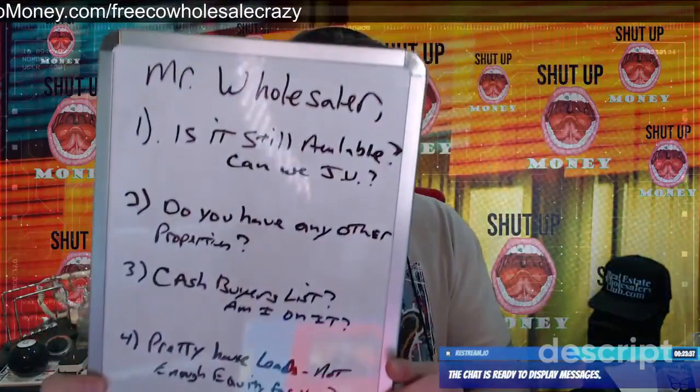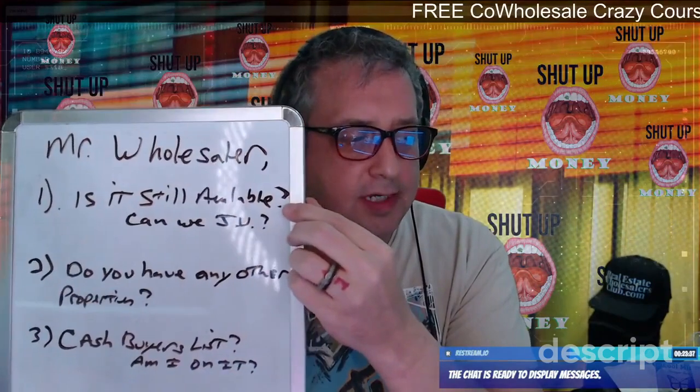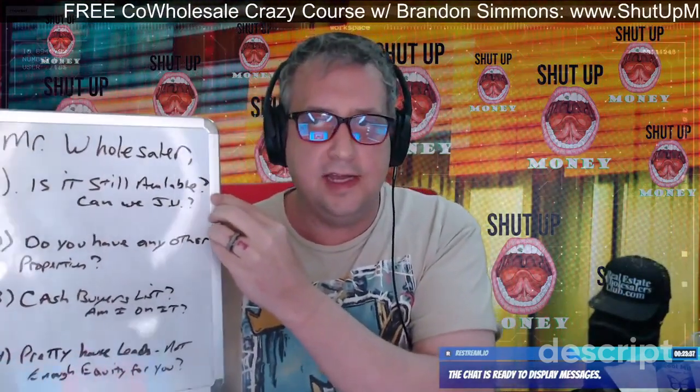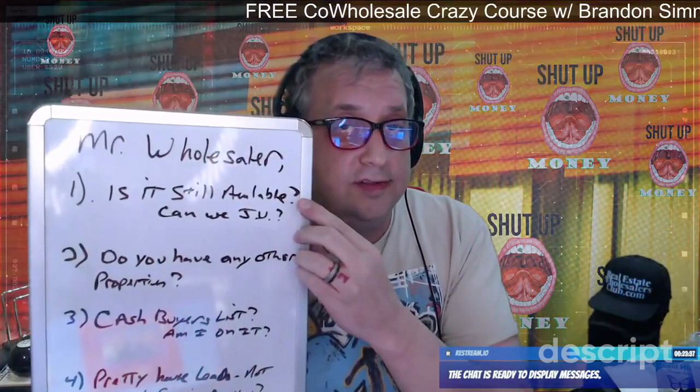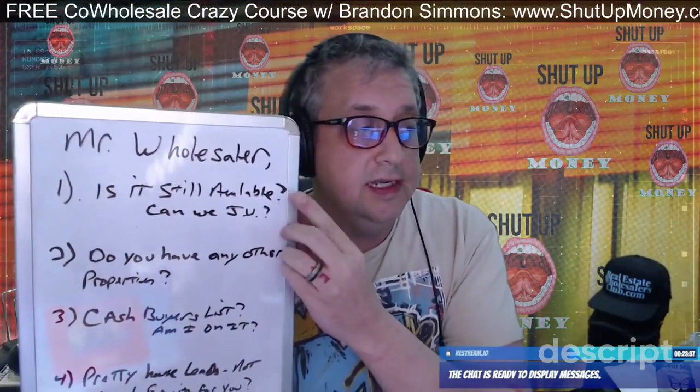I wrote it down here on my shiny board. When you call Mr. Wholesaler on the phone or start a conversation via text, you say: 'Mr. Wholesaler, is this property still available? Can we JV?' That's goal number one — contacting or reaching out to JV partner wholesalers, other wholesalers. The objective is to find out: is this property still available?